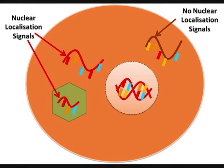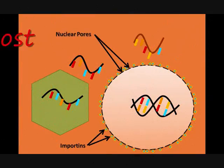Proteins found in the cytoplasm that are intended for use in the nucleus contain sequences of amino acids termed nuclear localization signals. These signals can only be recognized by cytoplasmic receptors called importins. Importins facilitate the transport of proteins to the nucleus. An example would be lentiviruses, which have nuclear localization signals associated with new DNA molecules.